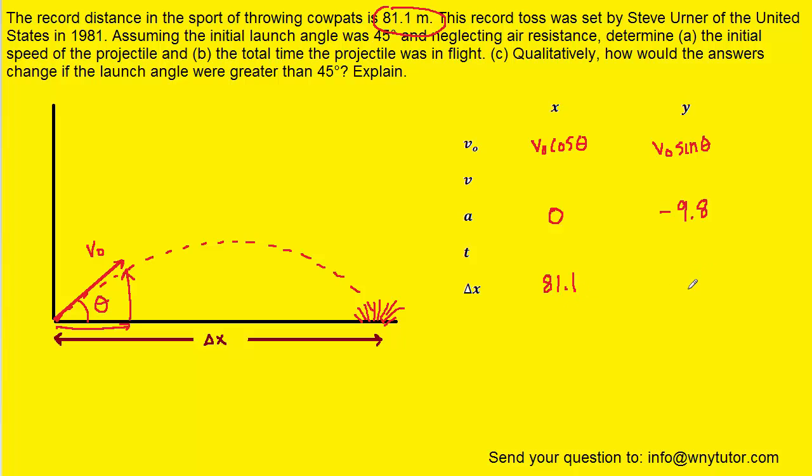For the y direction, the displacement is actually zero. To understand that, mark this point as the initial position and this point as the final position. If you compare the positions, the projectile hasn't actually moved upward or downward, so the displacement in the y direction is zero.